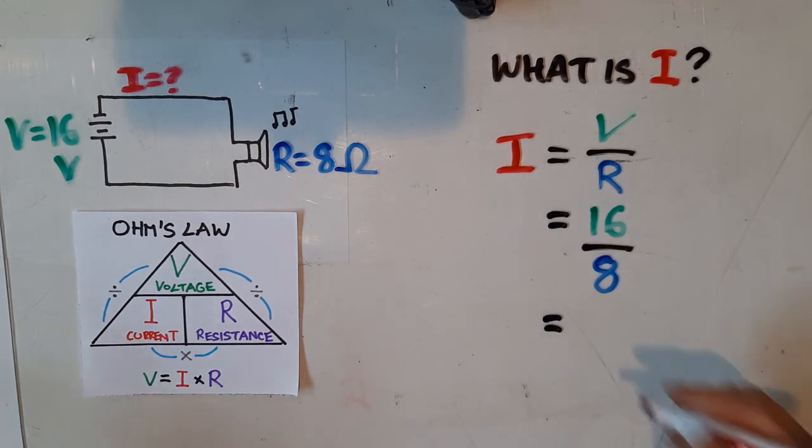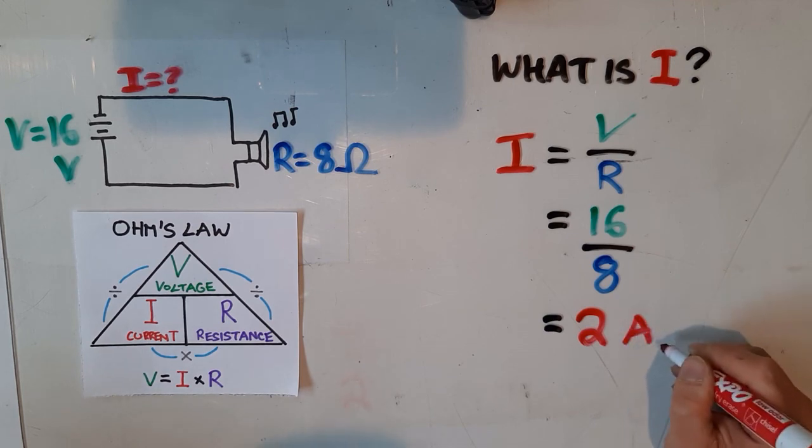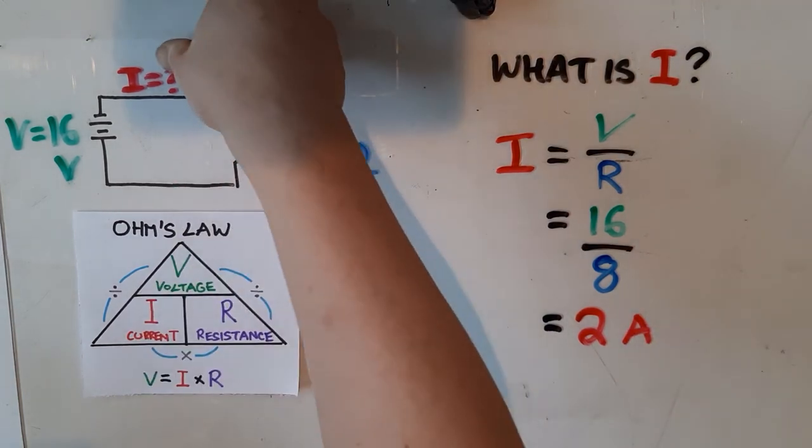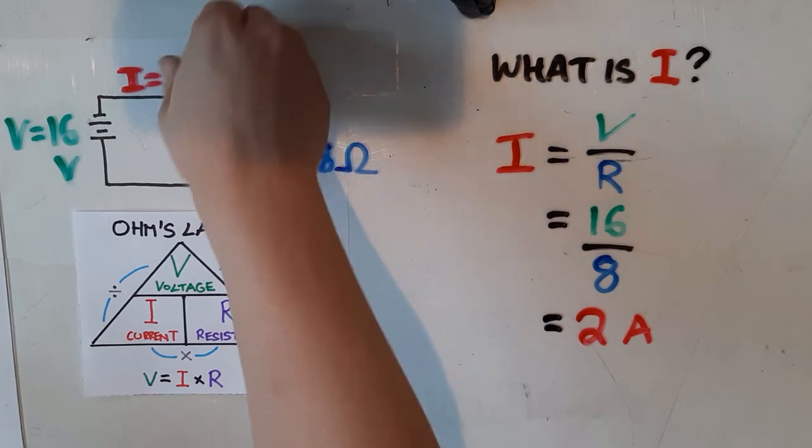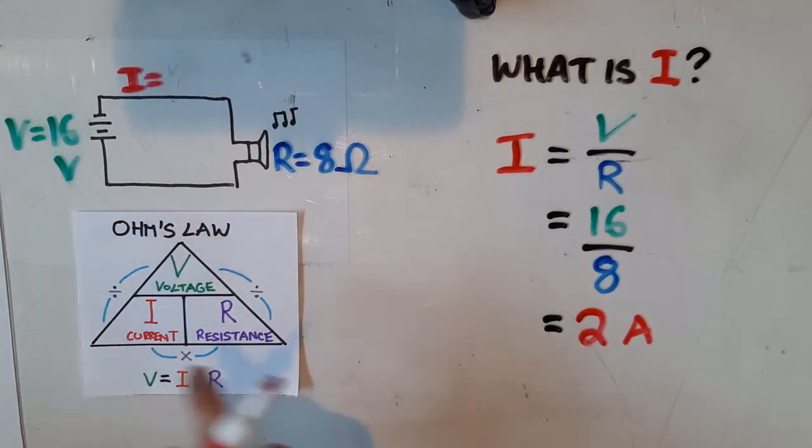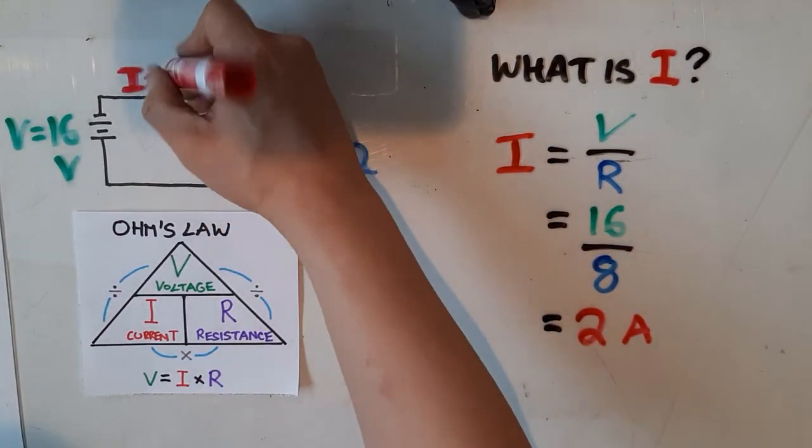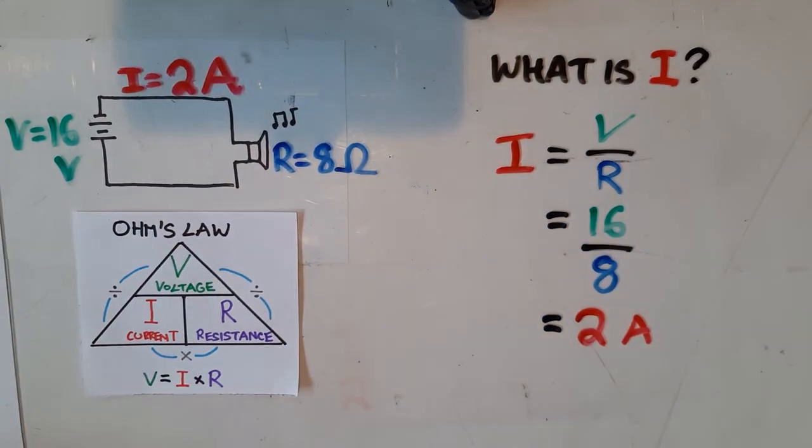So our answer, don't forget the units, is 2 amps. So we know in this circuit, a battery of 16 volts, with a circuit of 8 ohms of resistance, will produce 2 amps of current.